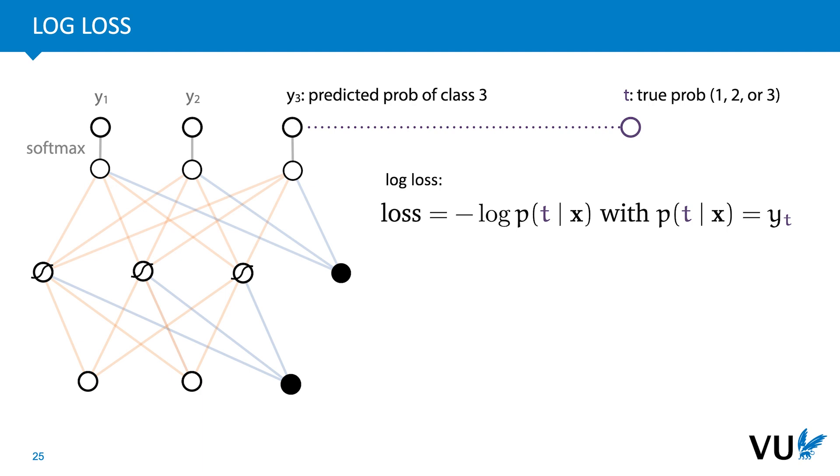The loss function for the softmax is then the same as it was for the binary classification. We assume that the data tells us what the correct class is, and we take the negative log probability of the correct class as the loss. This way, the higher the probability is that the model assigns to the correct class, the lower the loss is.